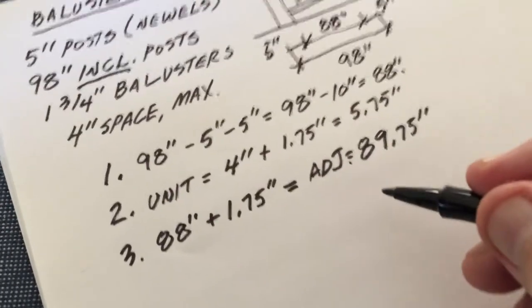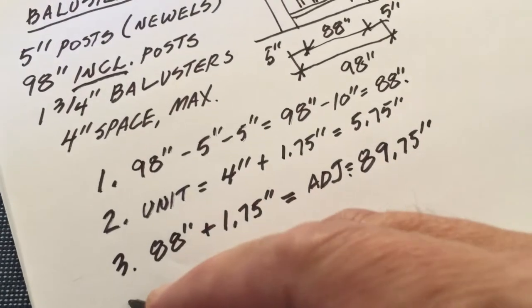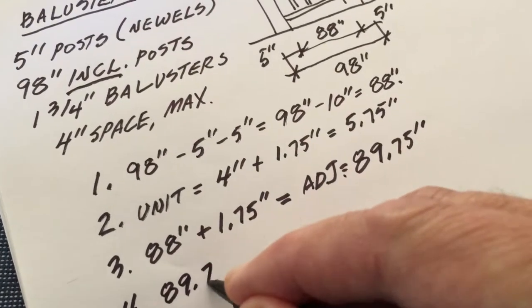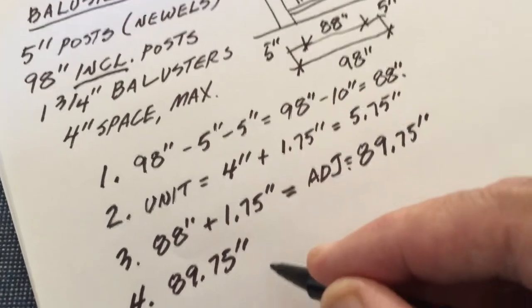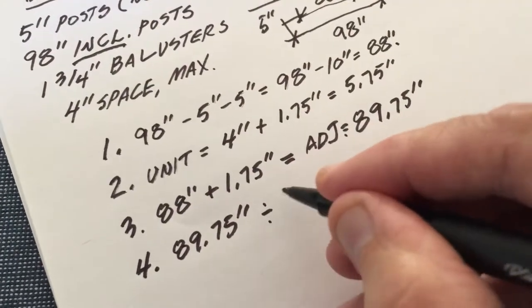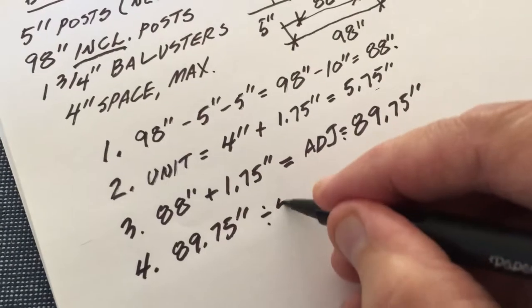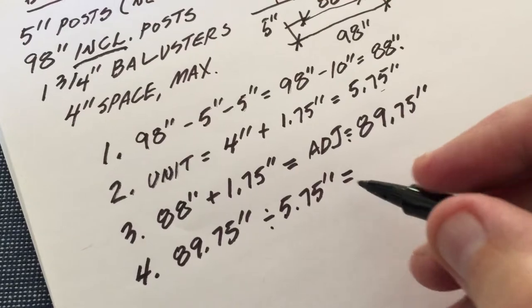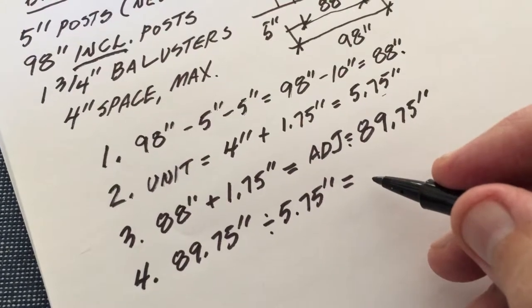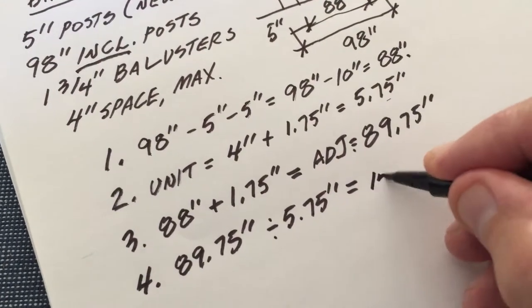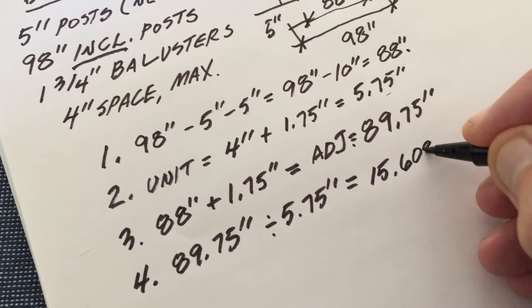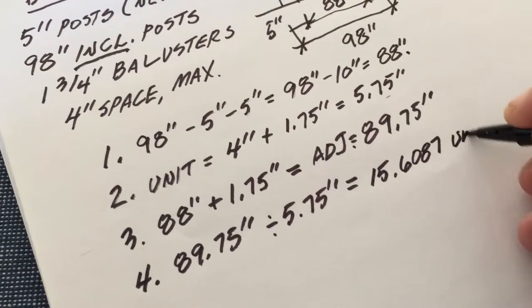Now I take that adjusted length and I divide my units into my adjusted length. 89.75 inches divided by 5.75 inches equals... the answer here is 15.6087 units.